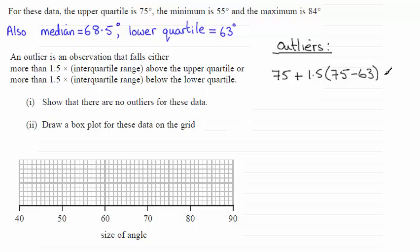Now if you work this out it comes to 93 and we're told that the maximum value is 84 so clearly 93 is greater than 84. So certainly there's no outliers when we look at this particular region.